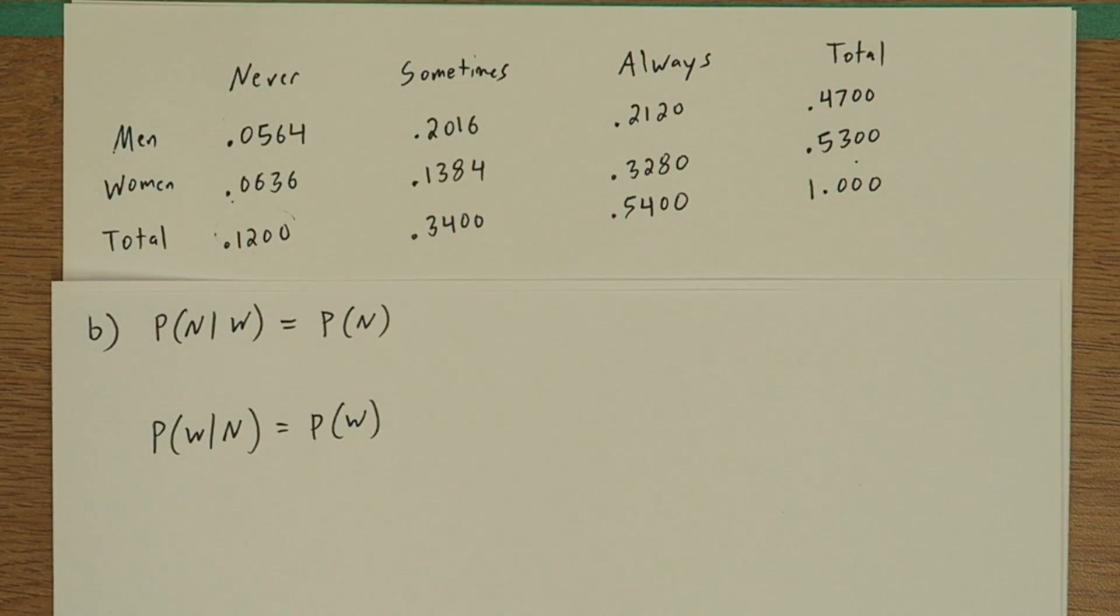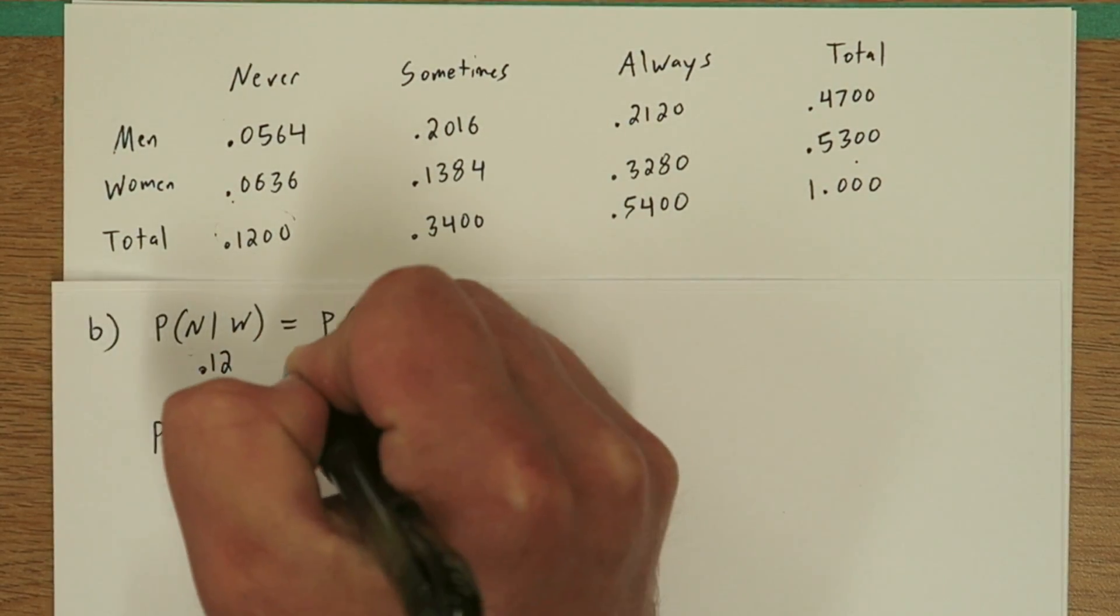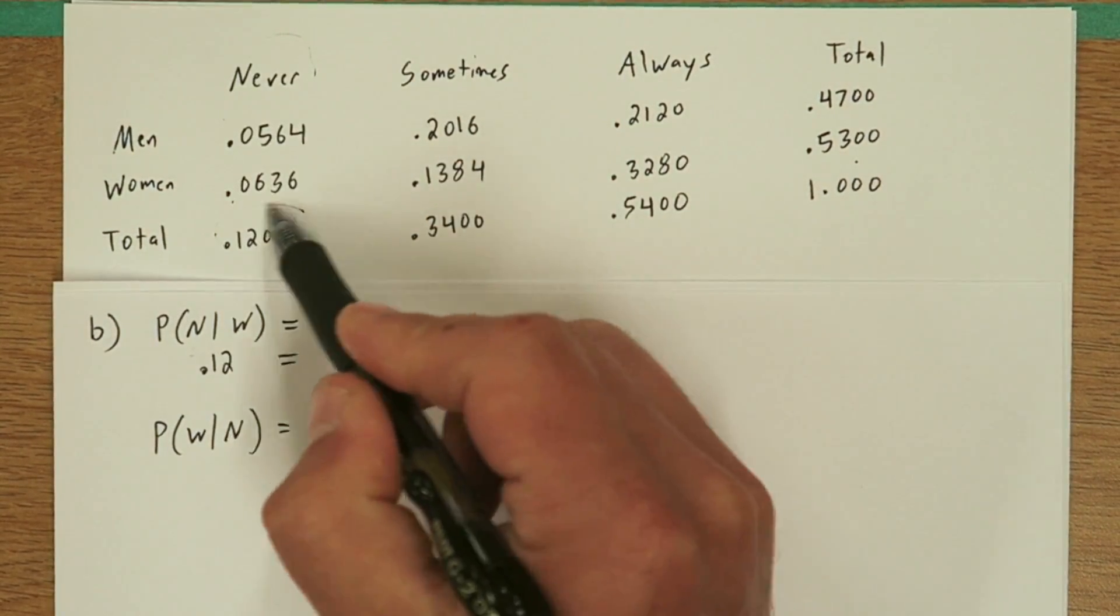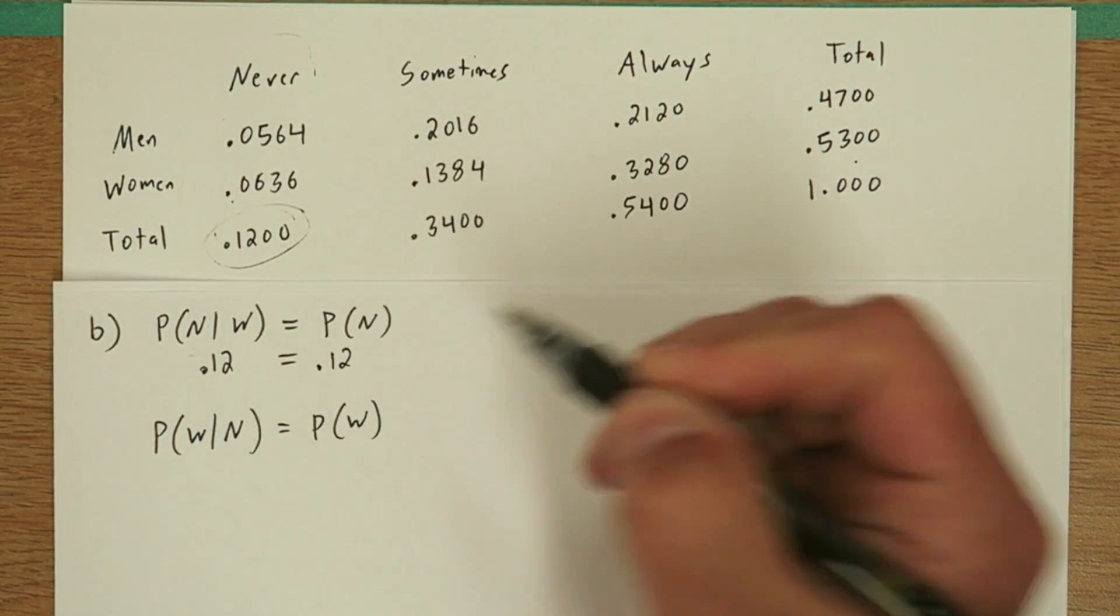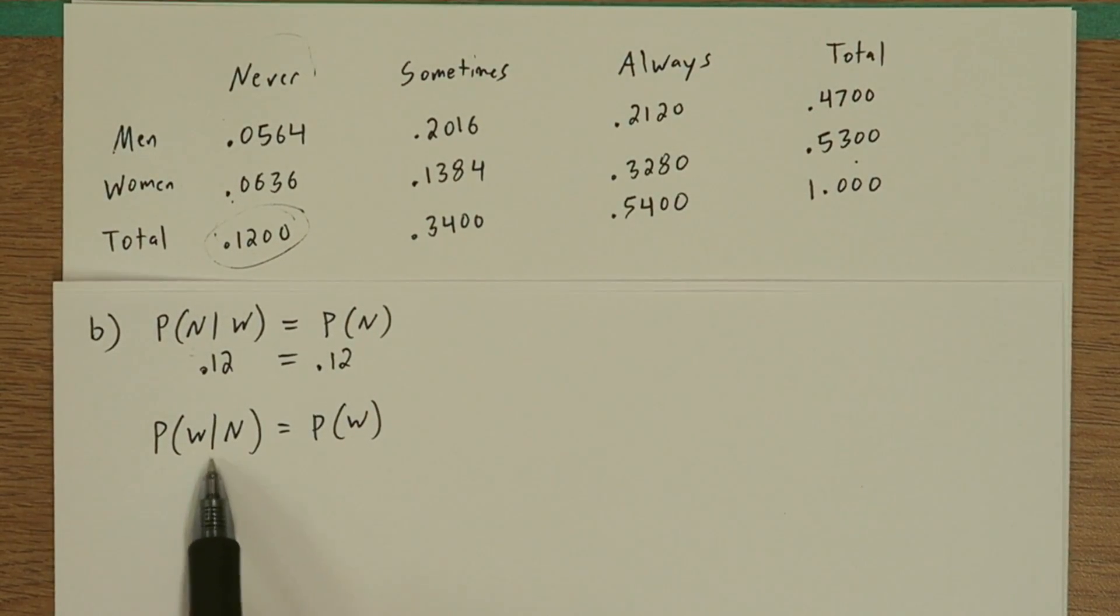In order for two events to be independent, the probability of one event happening given the other has occurred has to be the same as just the probability of that event happening. In other words, knowing that someone's a woman shouldn't tell you anything about whether they've never taken their medication or not, if woman and never are independent. In part A, we calculated this probability to be .12, and that actually equals the probability of never, which is .12. Just to be sure, we have to calculate it the other way around as well. The probability of woman given never has to equal the probability of woman.